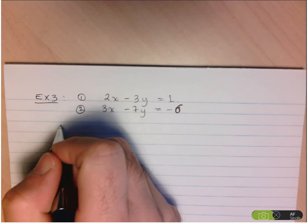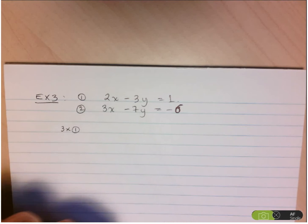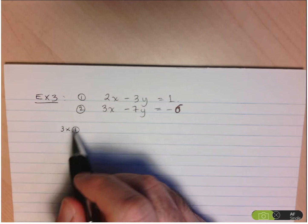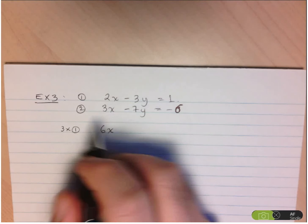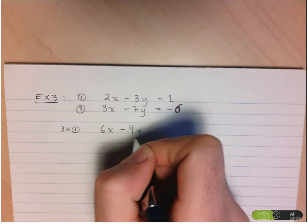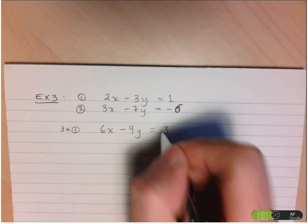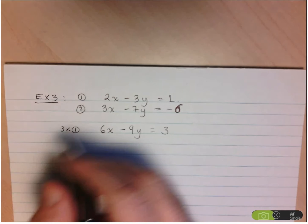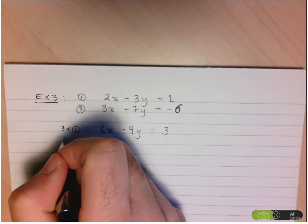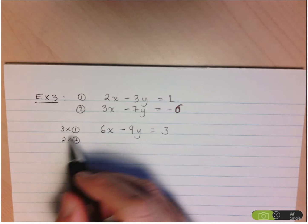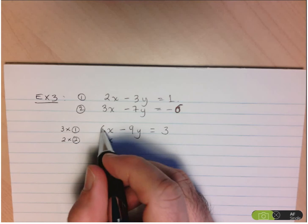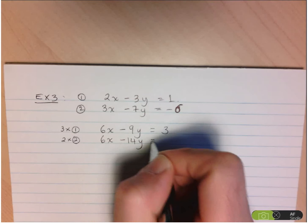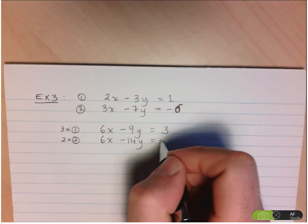I'm going to multiply equation 1 by 3 — remember, both sides must be multiplied. So 3 times 2 is 6x, 3 times negative 3 is negative 9y, and 3 times 1 is 3. That gives 6x minus 9y equals 3. Now I multiply equation 2 by 2: 2 times 3 is 6x, 2 times negative 7 is minus 14y, and 2 times negative 6 is negative 12. That gives 6x minus 14y equals negative 12.